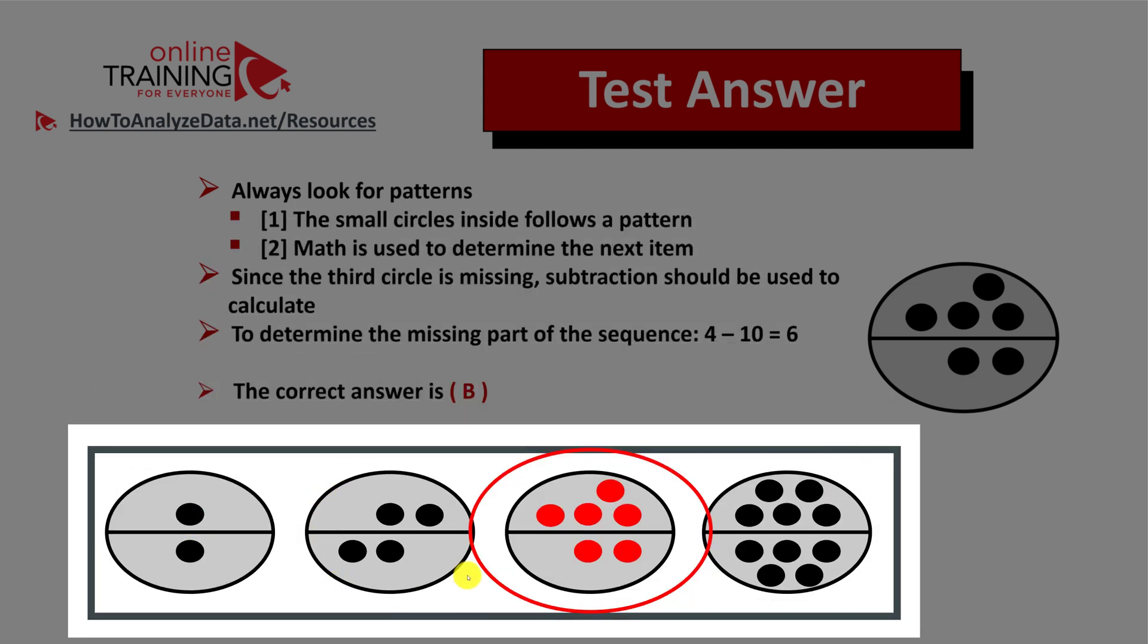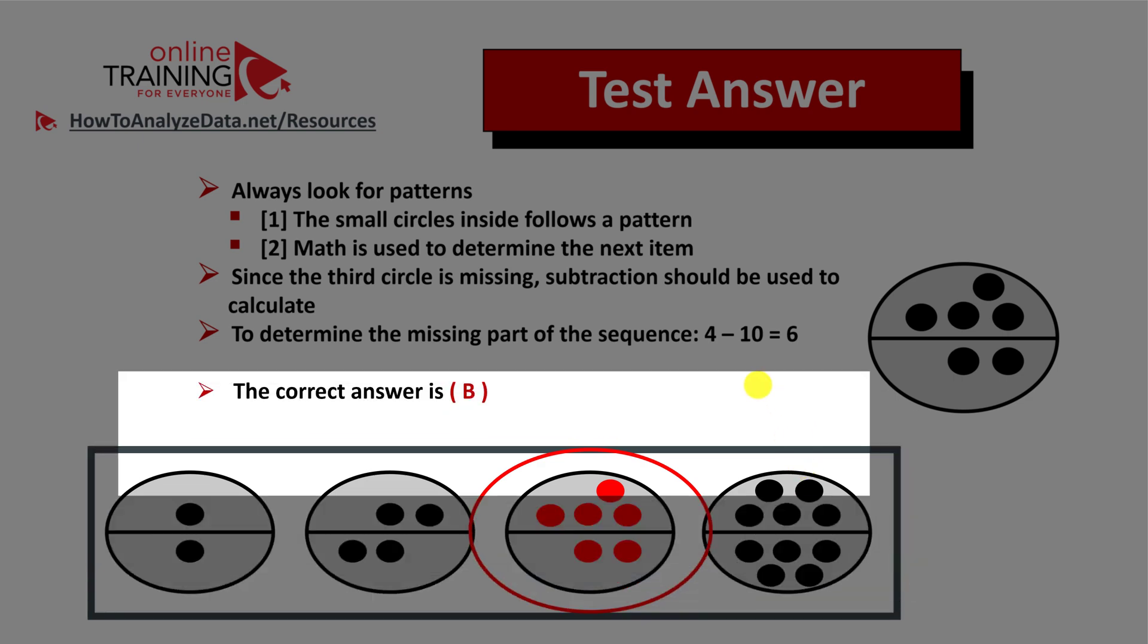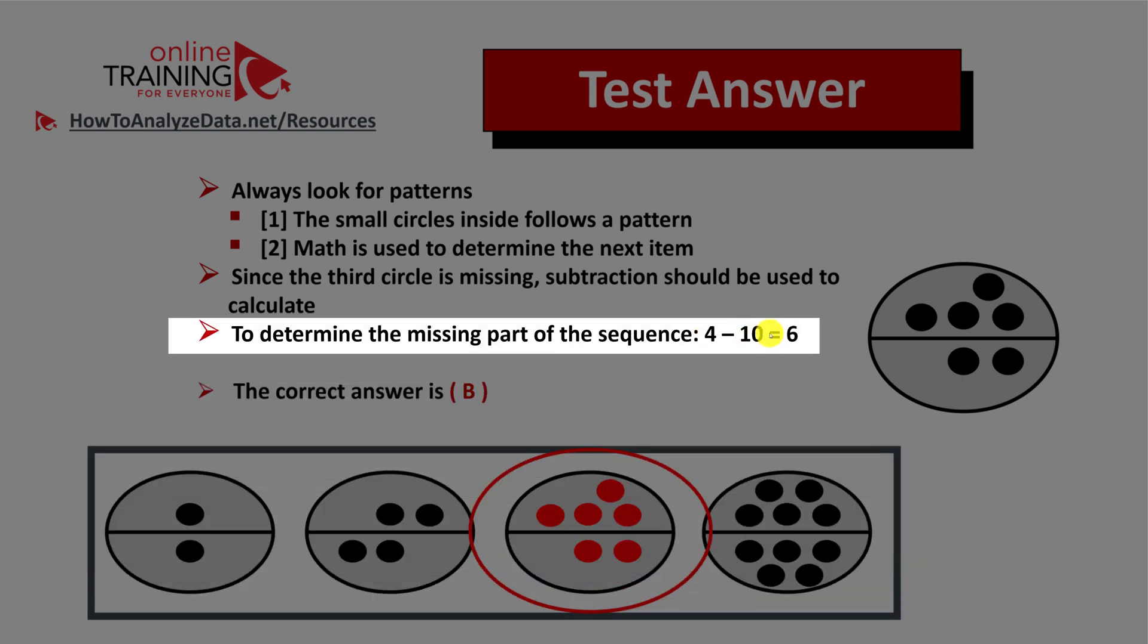You see that item number two has four small circles and item number four has 10 small circles. So we can use subtraction to calculate the item in the middle. And if we subtract 10 minus 4 we will get to 6.